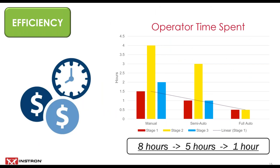Let's go back to that initial lab we talked about and plug in some real numbers. Over an eight-hour shift, the operator's time requirement to test the same number of specimens is reduced to five hours with semi-automated solutions like the automatic extensometer, an enhanced specimen measurement device, and pneumatic grips. With a fully automated system, you're down to just one hour — twelve and a half percent of the initial time requirement. That frees up seven full hours of an operator's time per day, so you're basically adding one additional lab technician without adding any overhead.